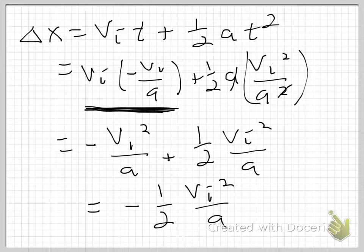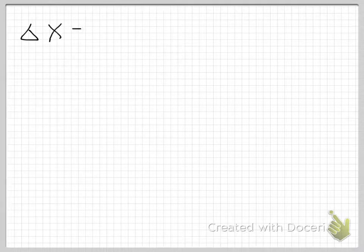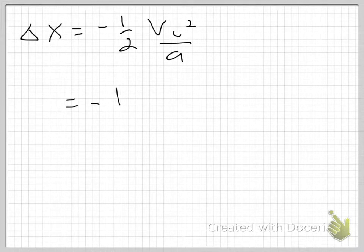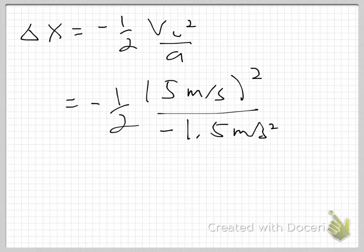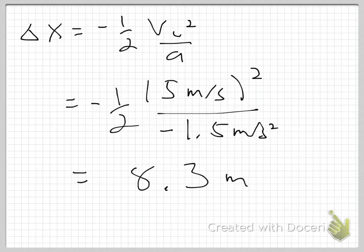Let's run the numbers for a numerical solution. Delta X equals negative one-half times (5 meters per second) squared, divided by A, which is negative 1.5 meters per second squared. Again the minus signs cancel, and plugging this into the calculator gives approximately 8.3 meters. So in the 3.3 seconds it takes this car to stop, the car travels 8.3 meters.